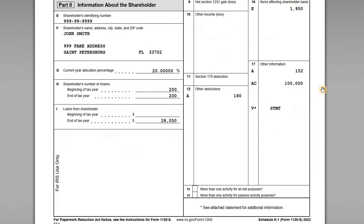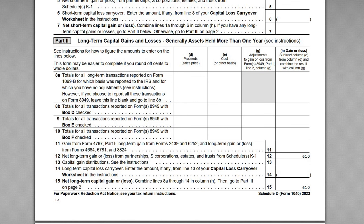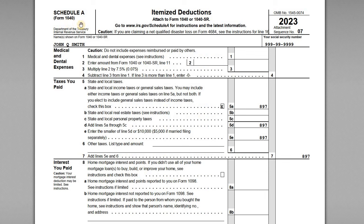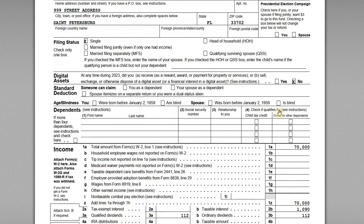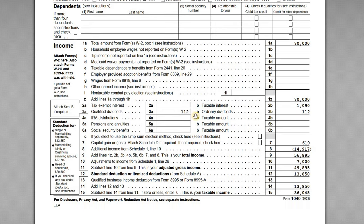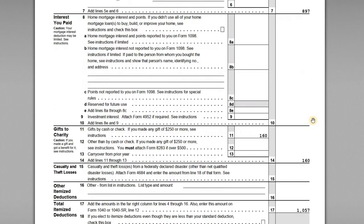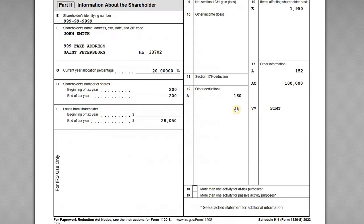Moving into the deductions section — line 12, Code A is a charitable deduction, specifically cash contributions to a charity, subject to a 60% of AGI limitation. On John's return, charitable contributions would be reported on Schedule A as an itemized deduction, line 11. However, John's total itemized deductions are only $1,057, so he will claim the standard deduction of $13,850 instead, though the charitable allocation from the K-1 has still been accounted for.